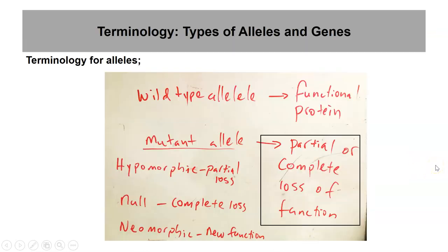Terminology. I got out my whiteboard and made some definitions for terminology having to do with different types of alleles. A wild-type allele is the most common allele in a population, and it encodes a protein that's functional. If a wild-type allele has a mutation, that will produce a mutant allele. Usually mutant alleles produce either a partial or complete loss of function of the encoded protein.